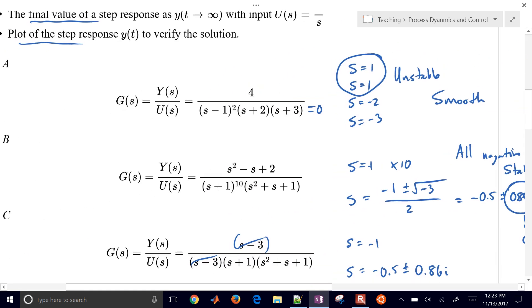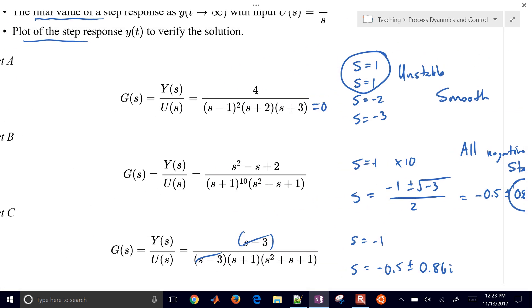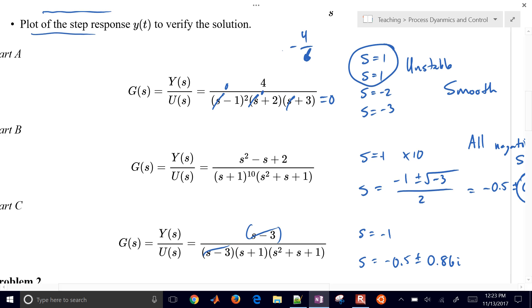So let's just go ahead and plug in s equals 0 here. So in this case, we'd have 0, 0, 0, and we'd be left with negative 4 divided by 6. And so that would suggest that's our final value, but for unstable systems, final value theorem doesn't apply. So that one doesn't apply. There is no final value. It goes to infinity.